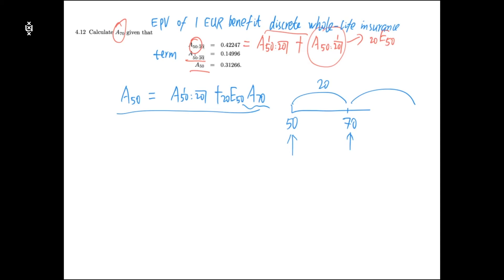In this equation we know almost everything except this term. Remember we have a connection between endowment and pure endowment insurance. Based on this we can solve the discount factor which is also the expected present value of the pure endowment insurance.